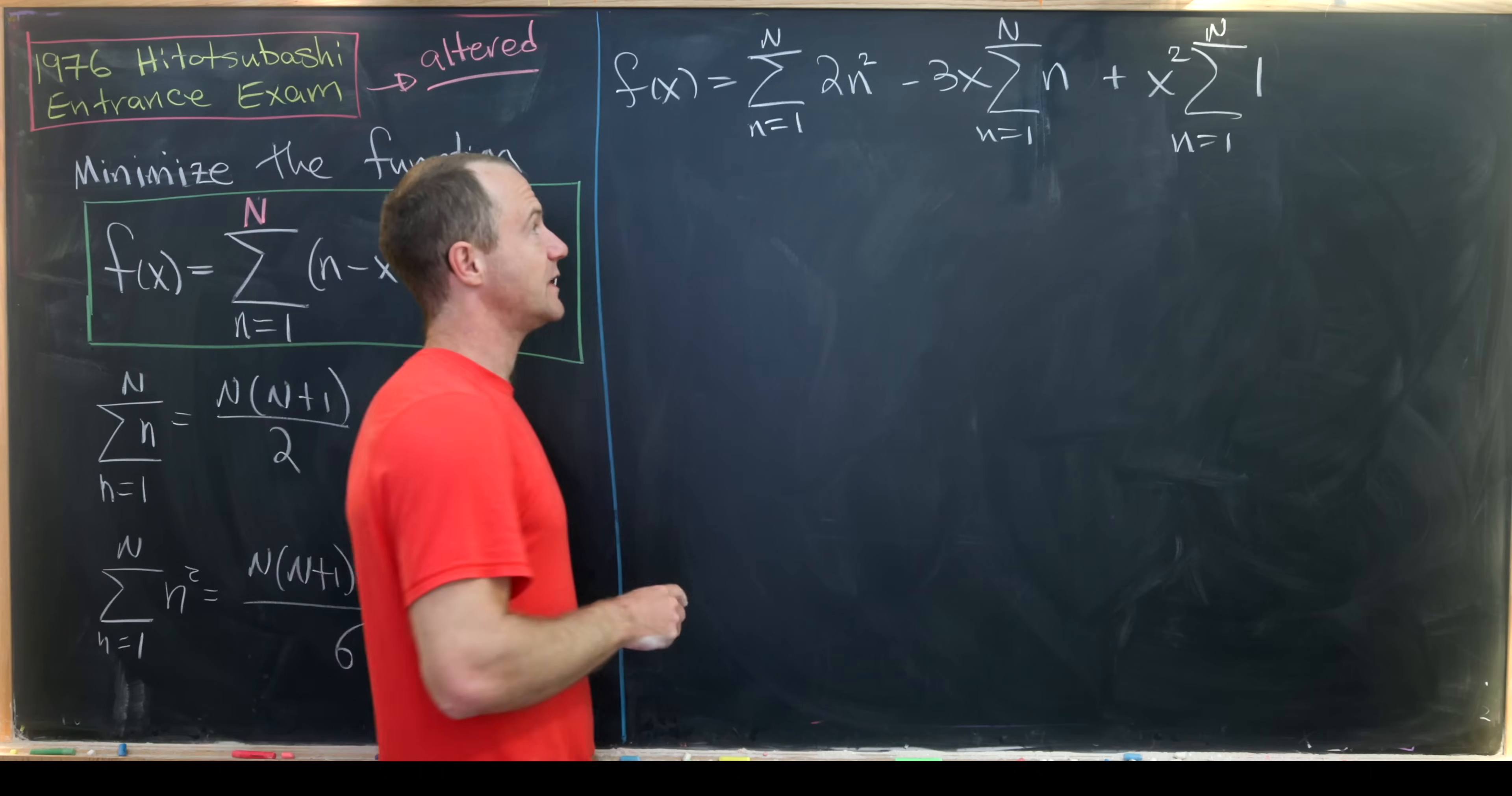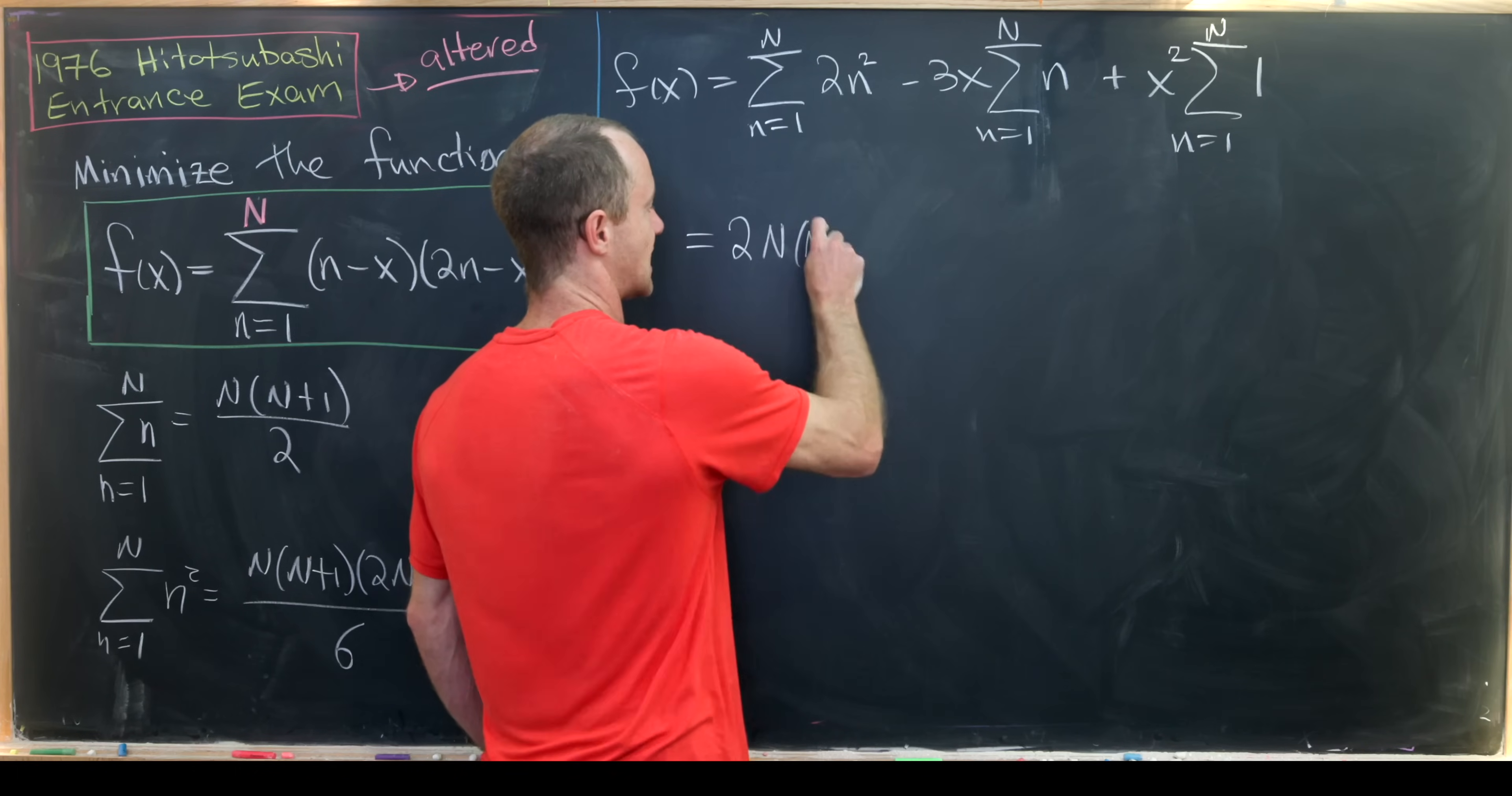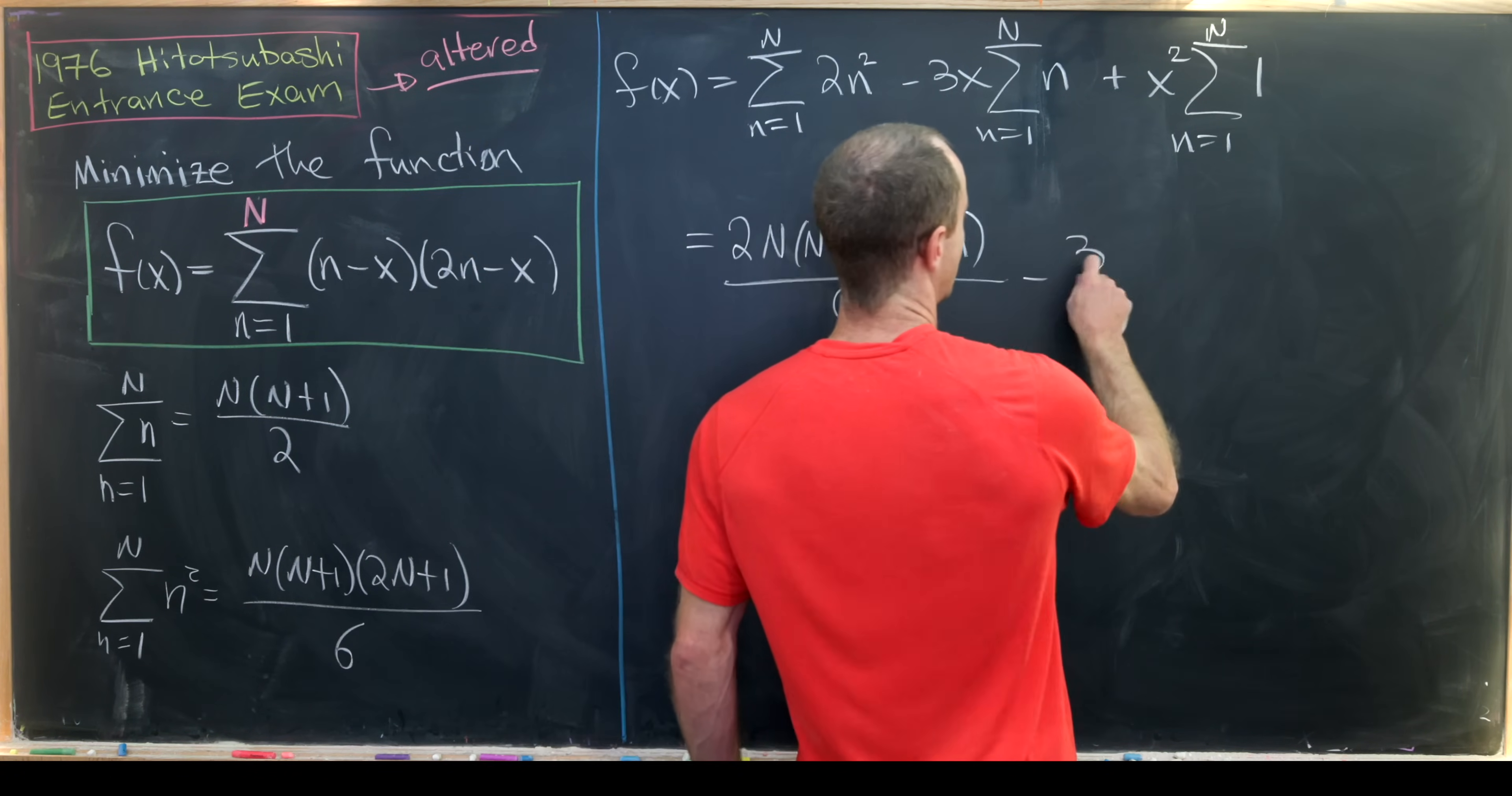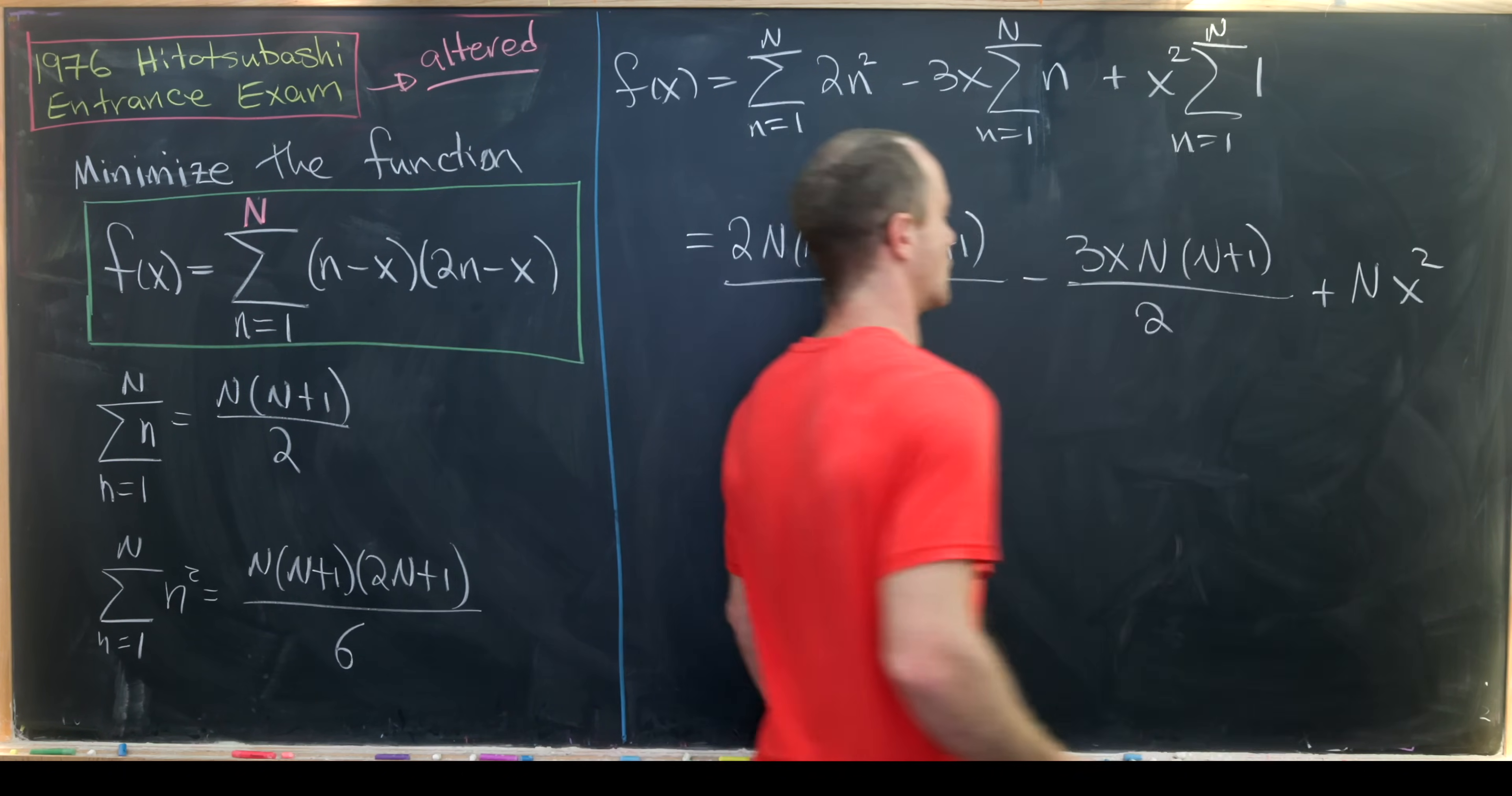Okay now we can apply our closed sum formulas. So we'll have 2 times N(N+1)(2N+1) all over 6 and then minus 3x times N(N+1) over 2 and then finally plus N times x².